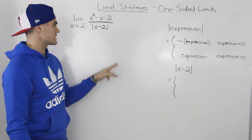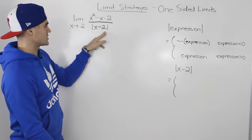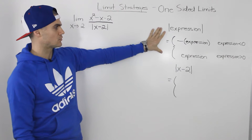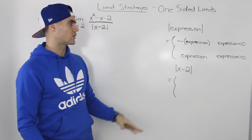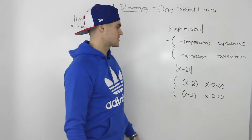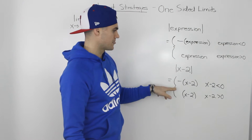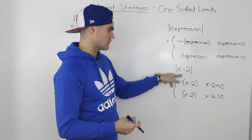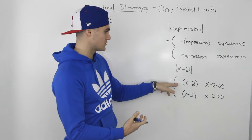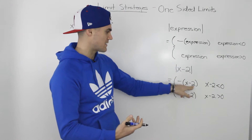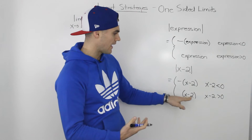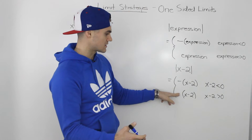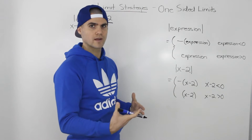The first step is to create a piecewise function for just this absolute value expression. We'll use the general result from the overview video. The absolute value of x minus two equals negative (x minus two) when x minus two is less than zero, and equals (x minus two) when x minus two is greater than zero, because it's already positive.